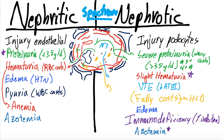Lastly, in nephrotic syndrome, you can also tend to see hypocalcemia. That is because you're losing so much albumin — albumin is negatively charged and calcium is positively charged, so albumin carries calcium. Without albumin, calcium homeostasis is dysregulated because you have less albumin carrying calcium. So those are the big differences between nephritic and nephrotic syndrome.